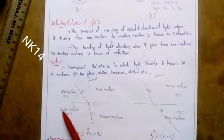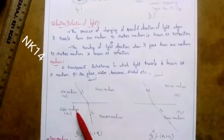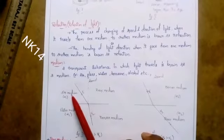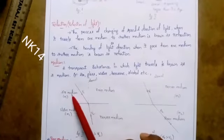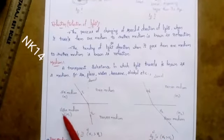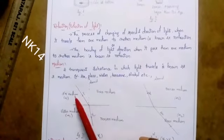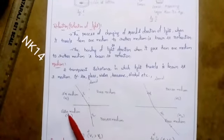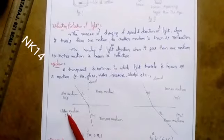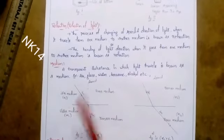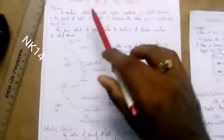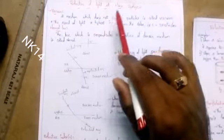In the diagram, I have taken air medium and water medium. Air is lighter than water, so air becomes the rarer medium and water becomes the denser medium. Now coming to today's topic: refraction of light at plane surfaces.